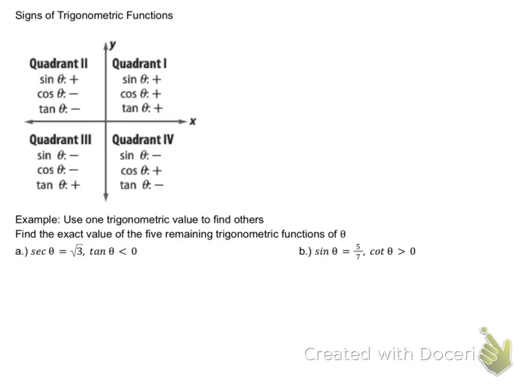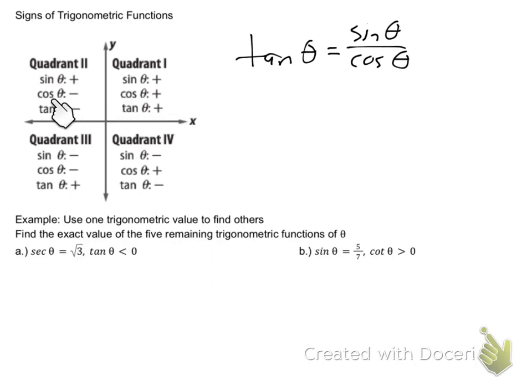Remember the connection that tangent θ equals sine of θ over cosine θ. When you divide a positive by a positive, it's positive. Divide a negative by a negative, it's positive. Divide a positive by a negative, or a negative by a positive, you still get a negative. So that's why tangent is positive in Q1 — positive divided by positive. In Q2, sine is positive and cosine is negative, so dividing those two gives a negative. Negative divided by negative makes a positive in Q3.